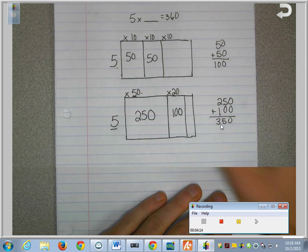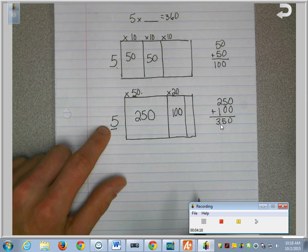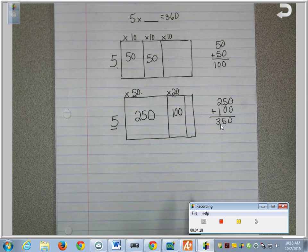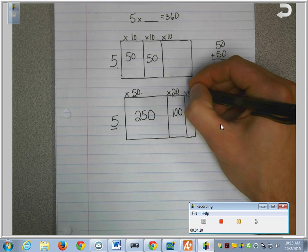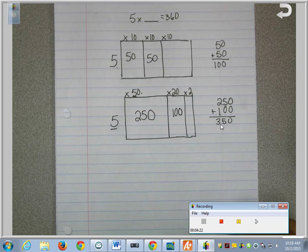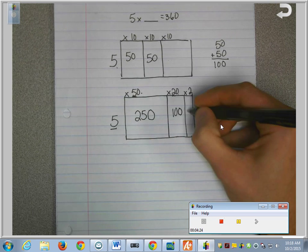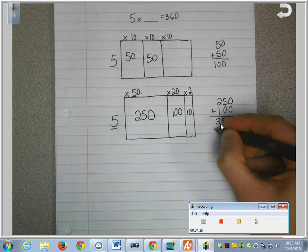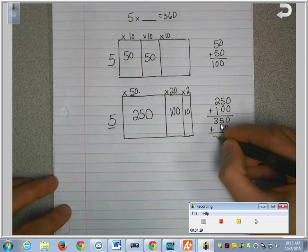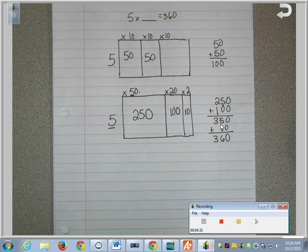So now we need to think in our heads, is there 5 times anything that's going to give us that 10? Well, of course, 5 times 2 makes 10. So at the top, I'm going to write times 2 and that equals 10. I add that to where I'm keeping track of it. And now I've made it to my answer of 360.